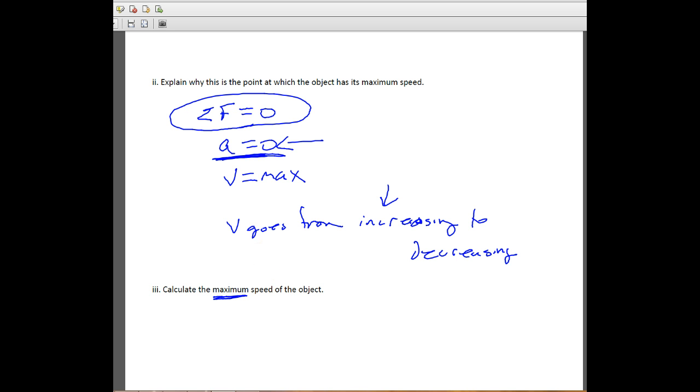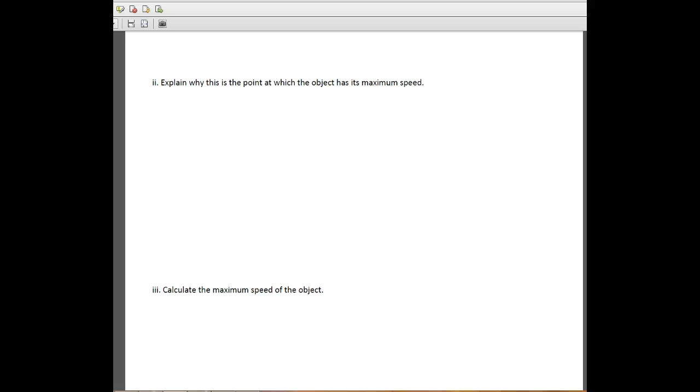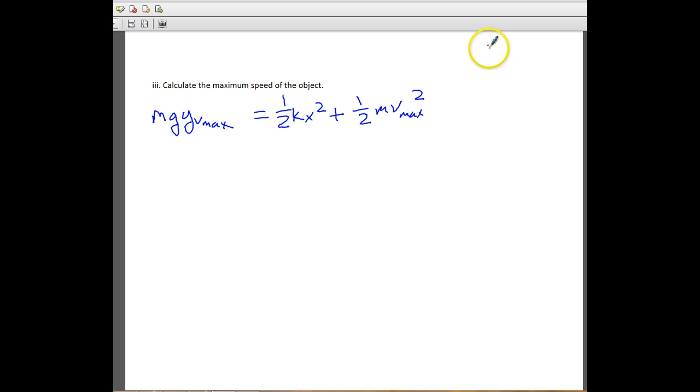They want us now to calculate the maximum speed of the object. So yes, this is a very long problem, but it's worth 15 points. And you only have three of these to answer in that 90 minutes. So that really makes it a little bit better. So here what we're going to do is we need to think about energy again. And if we think about energy, we know that we have mg, and then we said it was y_v_max. So at the maximum speed, this is the potential energy at the very top should be equal to one-half of kx squared. So that's the stretched rubber band or bungee cord plus one-half mv_max squared. So we know that when this thing falls, it starts at the top. All the energy is potential energy to gravity, and then it falls all the way down. Now, when it falls all the way down, all the energy here at this point is one-half kx squared.